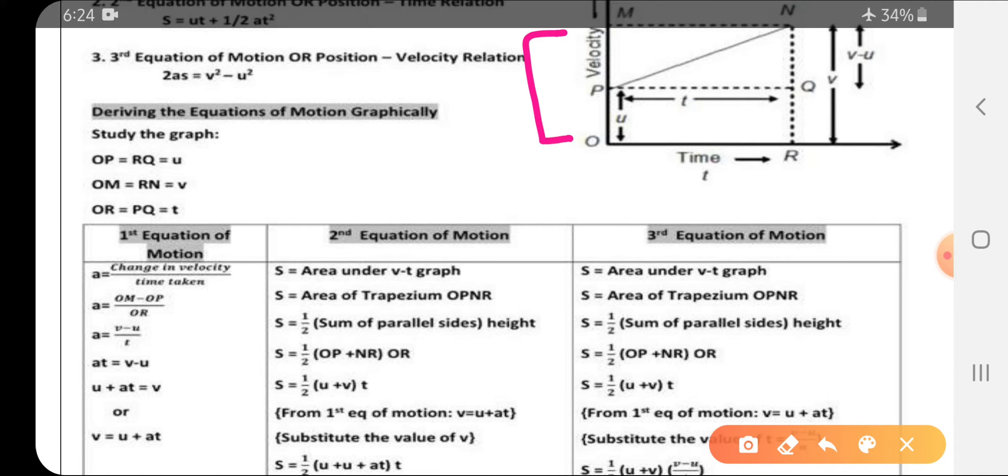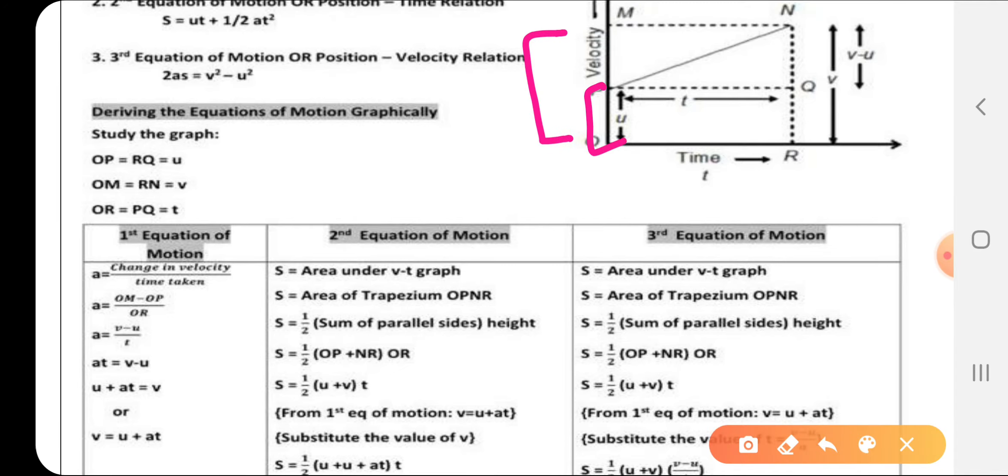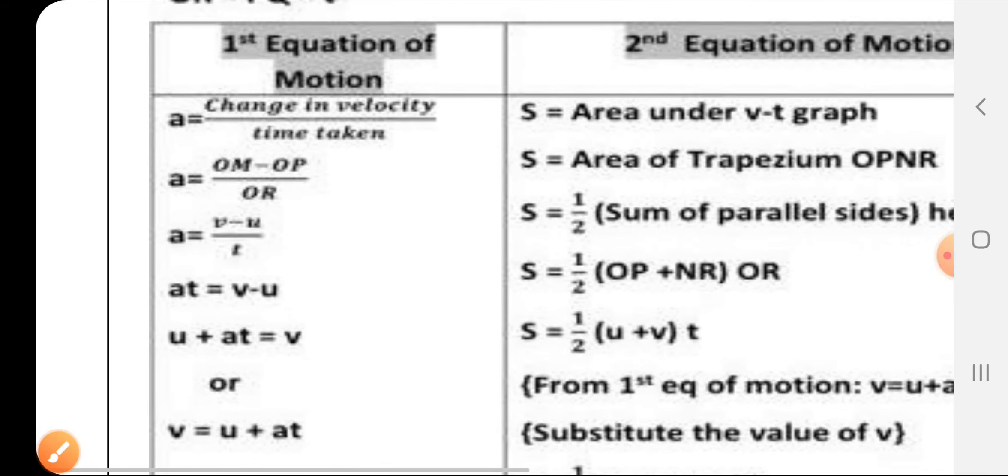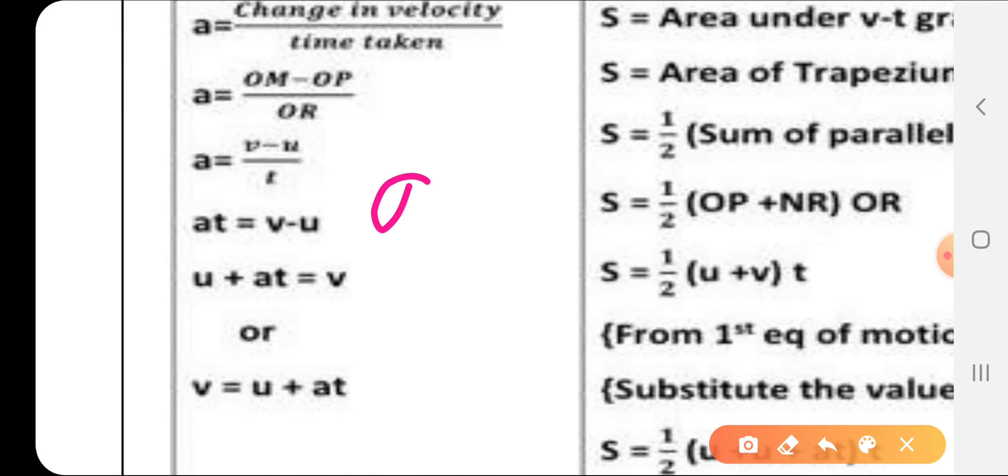In this graph, OM minus OP will give us the change in velocity. OM is v, OP is u. If I do v minus u, it gives me change in velocity in time t. So a = (v - u) / t.